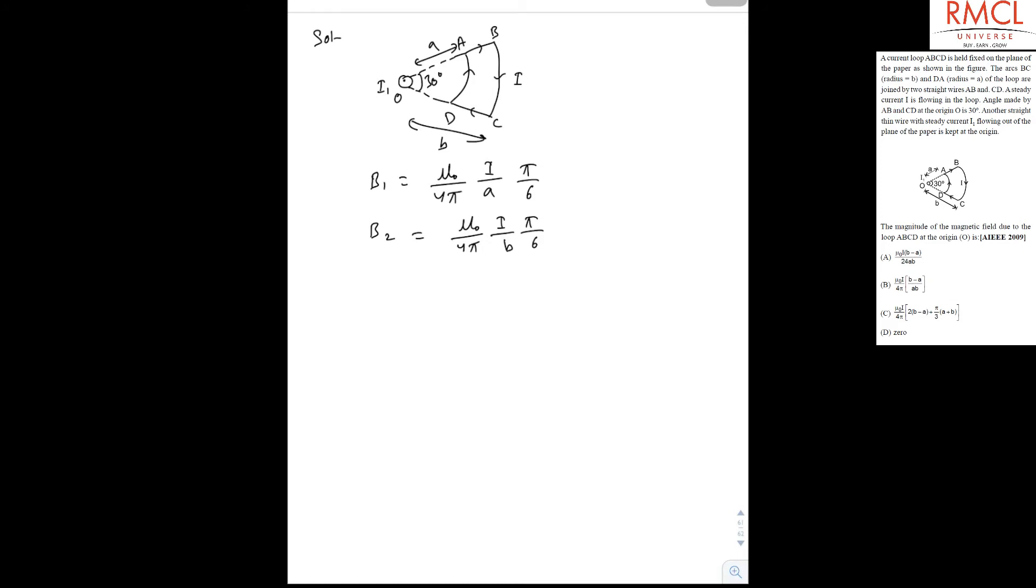So the net magnetic field we can find as B equal to B1 minus B2, as B1 will be greater than B2. So now it becomes mu0 upon 4 pi, and I and also pi by 6 will be common, so now it becomes 1 upon A minus 1 upon B. Pi and pi will be cancelled out. So mu0 upon 24 and it is B minus A upon AB. So the correct option is A.